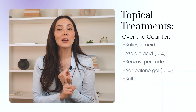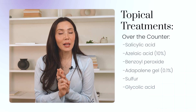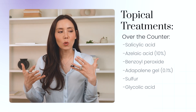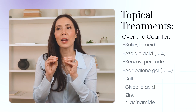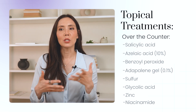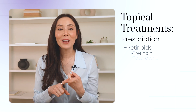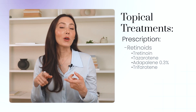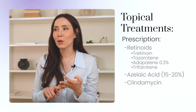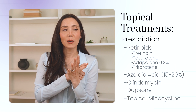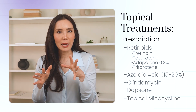Then there's sulfur, which is getting more popular — great for inflamed acne and those who deal with more redness. Glycolic acid is great alongside azelaic acid for people who are pregnant, and it also helps with exfoliation — often combined with salicylic acid in acne products. There are also ingredients like zinc and niacinamide, which aren't main acne actives but can support acne clearance in conjunction with other ingredients. For prescription topical treatments for more severe or stubborn acne, these include retinoids like tretinoin, tazarotene, adapalene 0.3%, and trifarotene — the newest class of retinoids. Azelaic acid in the 15 to 20% range, clindamycin which is a topical antibiotic, dapsone which has anti-inflammatory properties, and topical minocycline which is also a topical antibiotic used more for its anti-inflammatory properties.